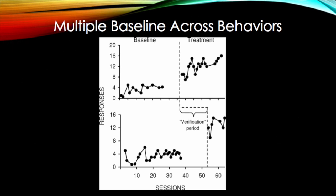In this example graph, you can see that the top portion is the first behavior to receive the intervention and the bottom portion is the second.